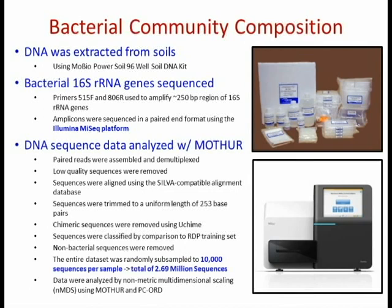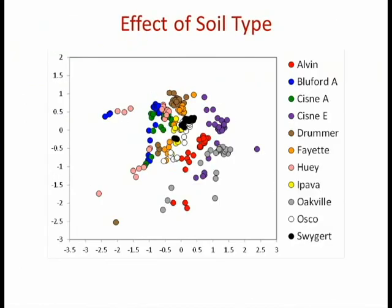This is a non-metric multidimensional scaling ordination of our bacterial community data. Each dot represents the bacterial community in one of those bottles. If two dots are very close together, they have very similar bacterial communities — the same types of species in the same abundance. If two points are far apart, their bacterial communities are very different in composition. I've colored the data points by soil type, which shows a significant influence of soil type on bacterial community composition.